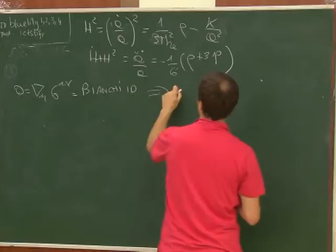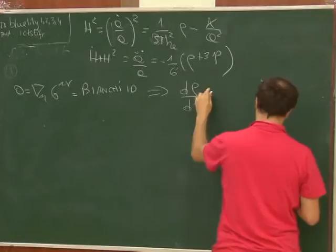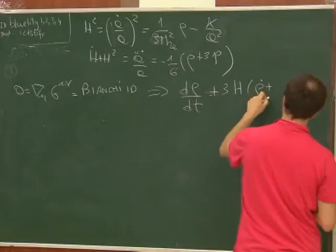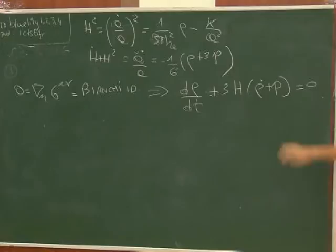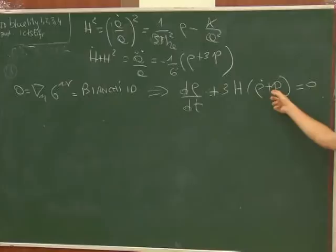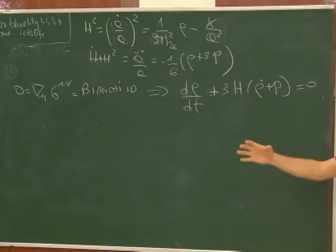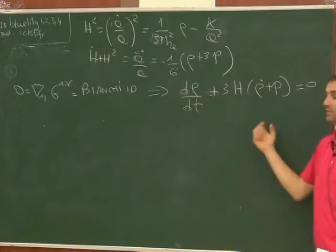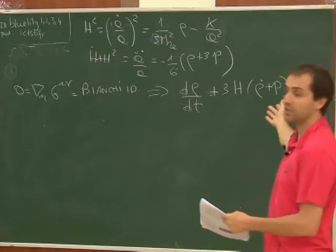Combining the Friedmann equations via the Bianchi identity gives: dρ/dt = −3H(ρ + p) = 0. This is the general relativistic generalization of energy conservation. The energy density changes with time proportional to the expansion rate H, and also to the pressure p, because as the universe expands, work is done against the pressure and energy is lost.